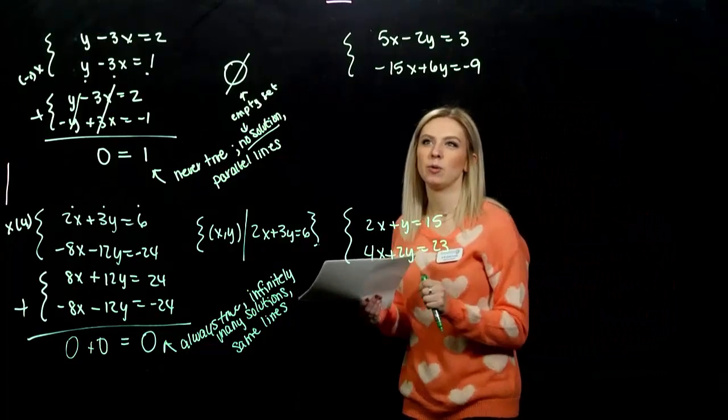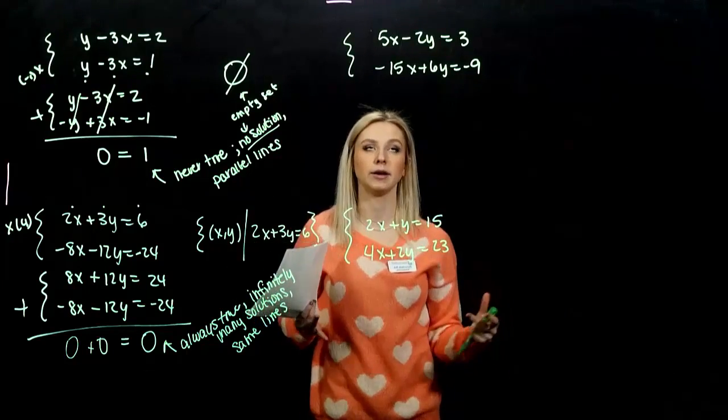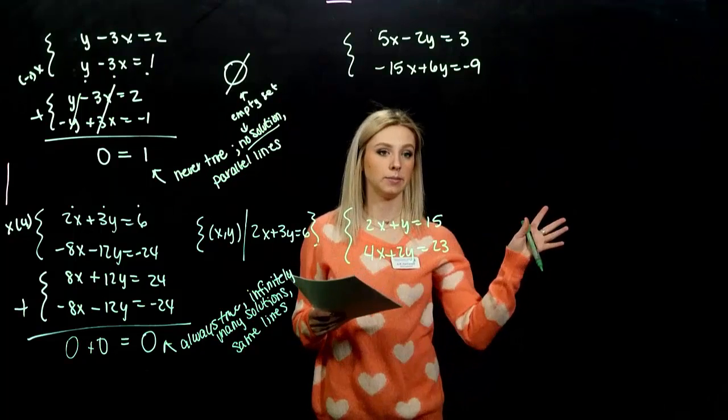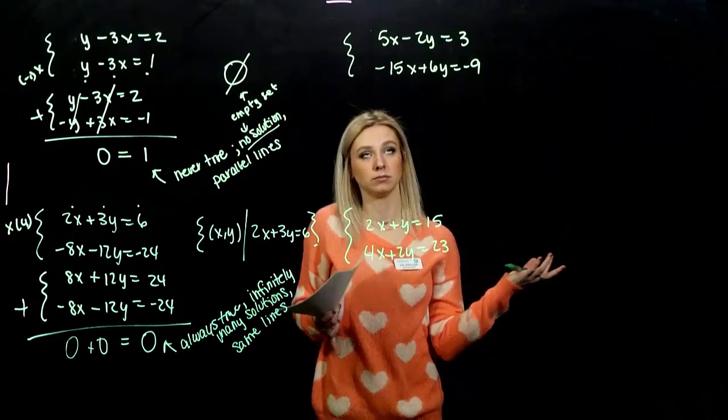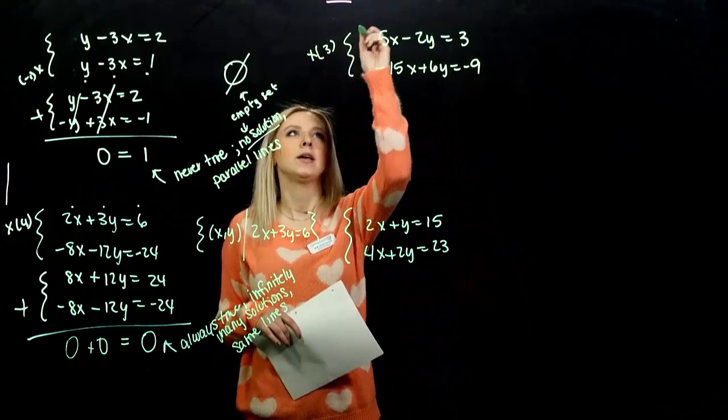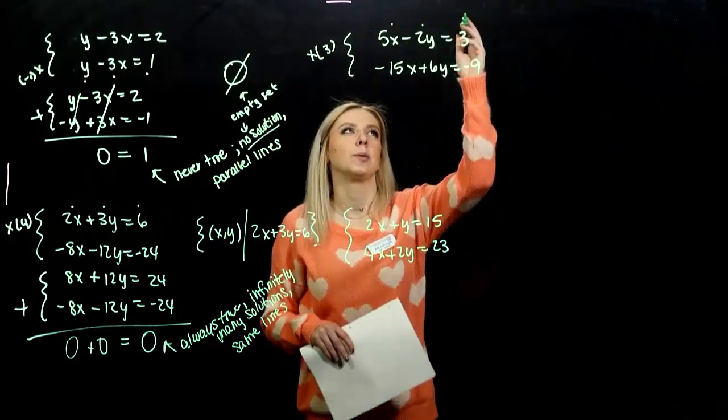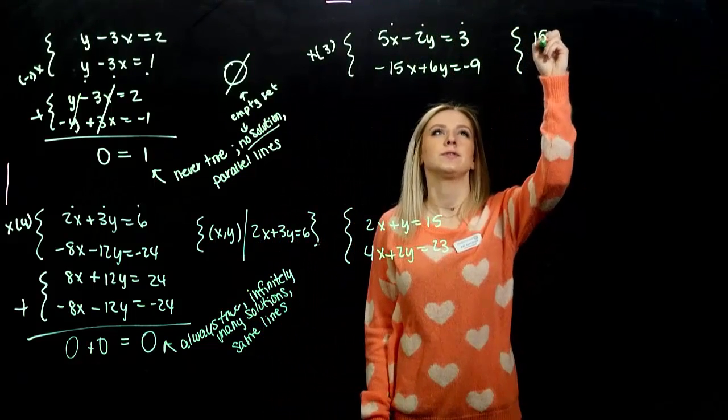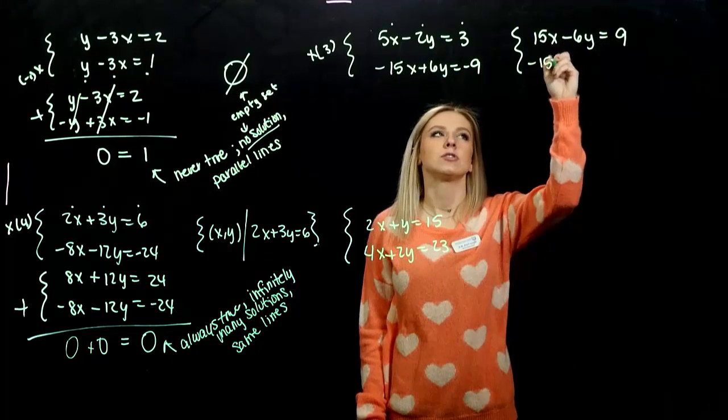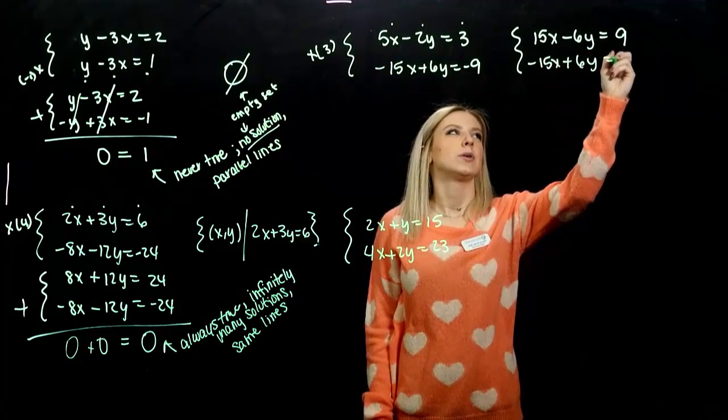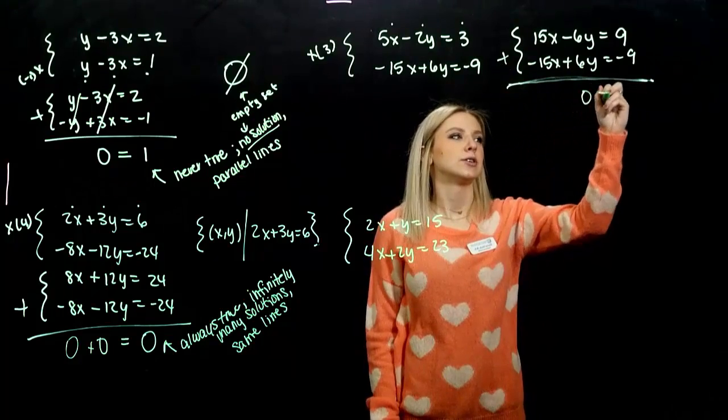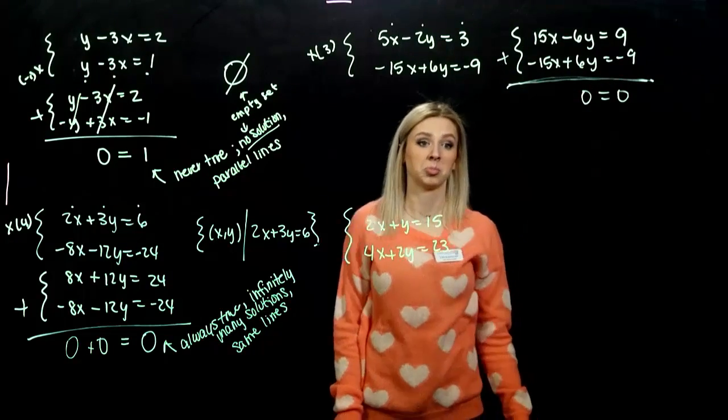So, the first example, both of them are in standard form. Let's just say we want to eliminate x. If you eliminate y, you're going to get the same thing. Cool part about math. So, if I want to eliminate x, I'm going to multiply that first one by a factor of 3. So, every single term by a factor of 3. So, 15x - 6y = 9. I didn't change the second one. But what do you notice? They're opposites. So, when we add them together, what are we getting? 0 = 0.